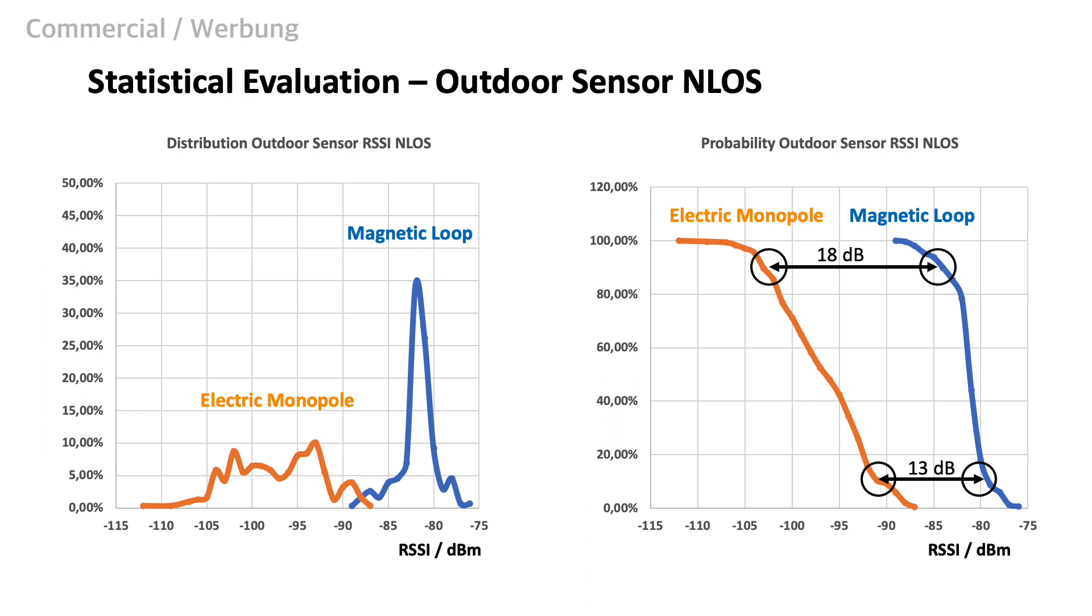Then, I expected a slightly higher antenna gain for the magnetic loop because of its radiation patterns. This would explain like 3 to 4 dB more signal strength. But what we see is a much better performance of the magnetic loop. For instance, in case we look for a high radio coverage probability, say 90%, we find the magnetic loop's performance being 18 dB better. In a low coverage probability scenario, it would be still 13 dB better.